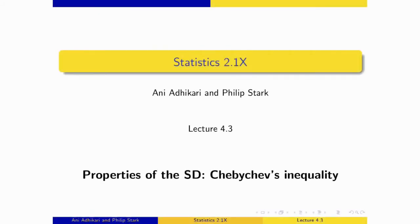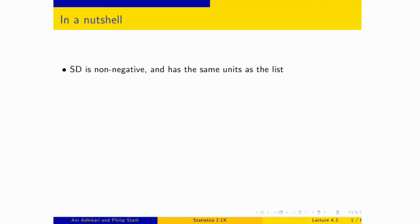Now that we're past all the technicalities, it's time to get back to why the standard deviation is the most commonly used measure of spread, why it does better than any of the others you've studied. What do we know about it? We know thus far that it's non-negative and it has the same units as the list. Well, that's great. We wouldn't not want that. But all of the other measures of spread also have that. What is it that makes the SD special?